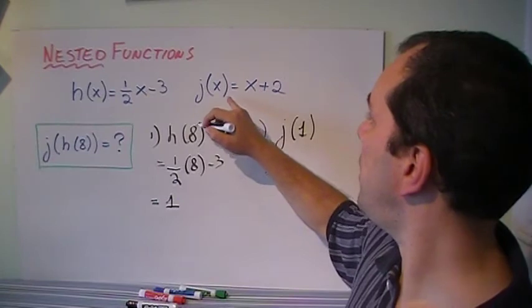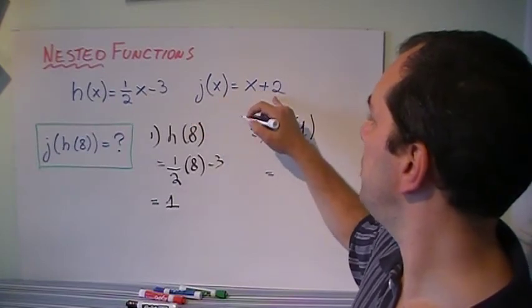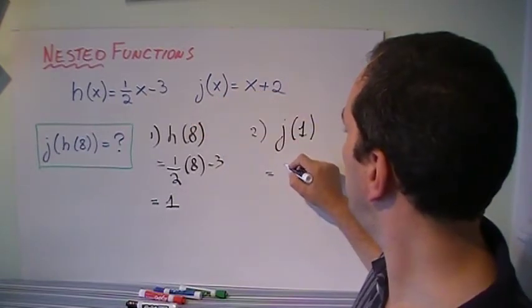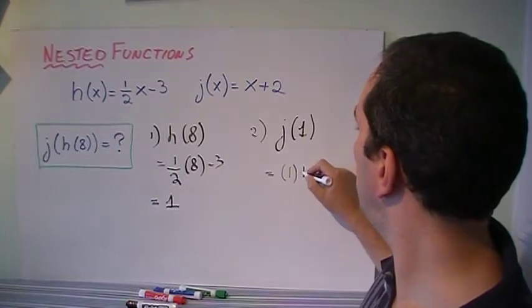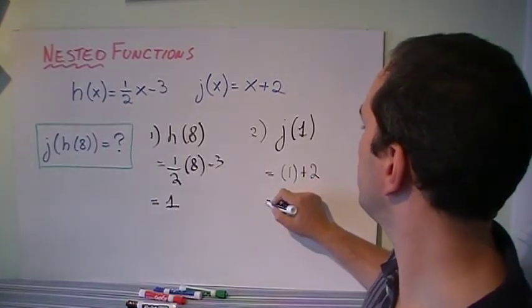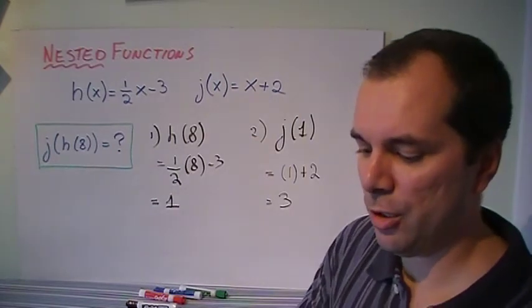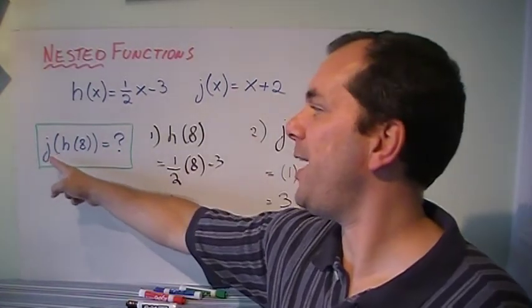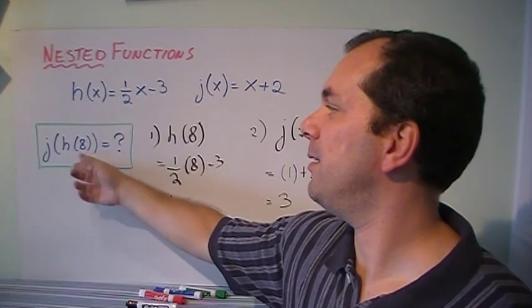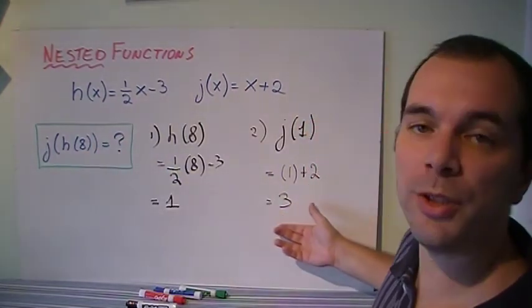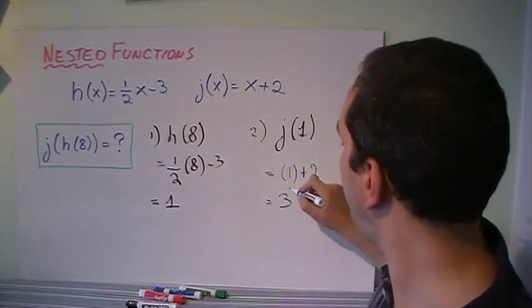And j(x) was x plus 2. So therefore I'm going to say 1 plus 2. And 1 plus 2 is 3. So in short, j(h(8)) would be equal to 3. And that's your final answer.